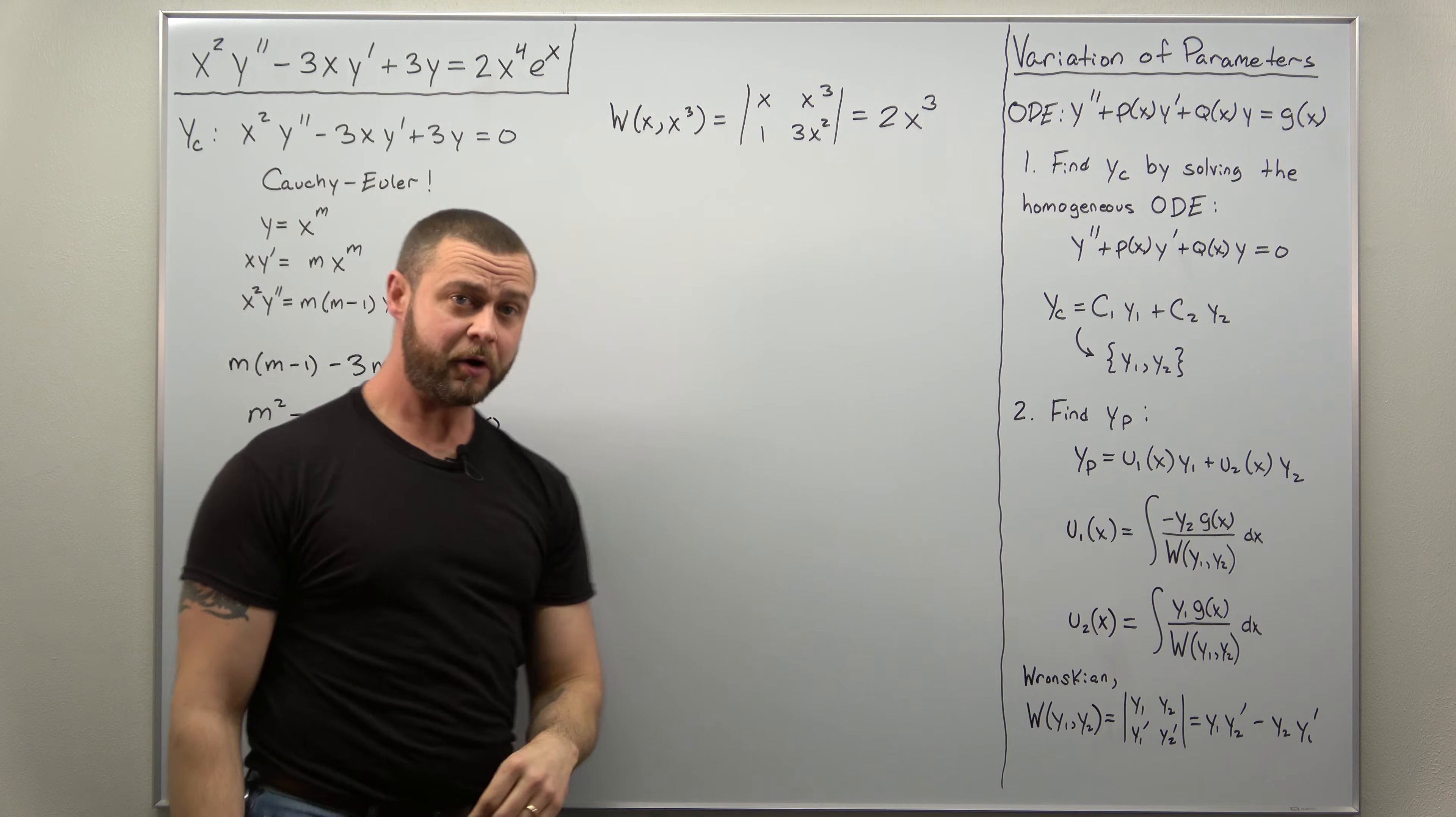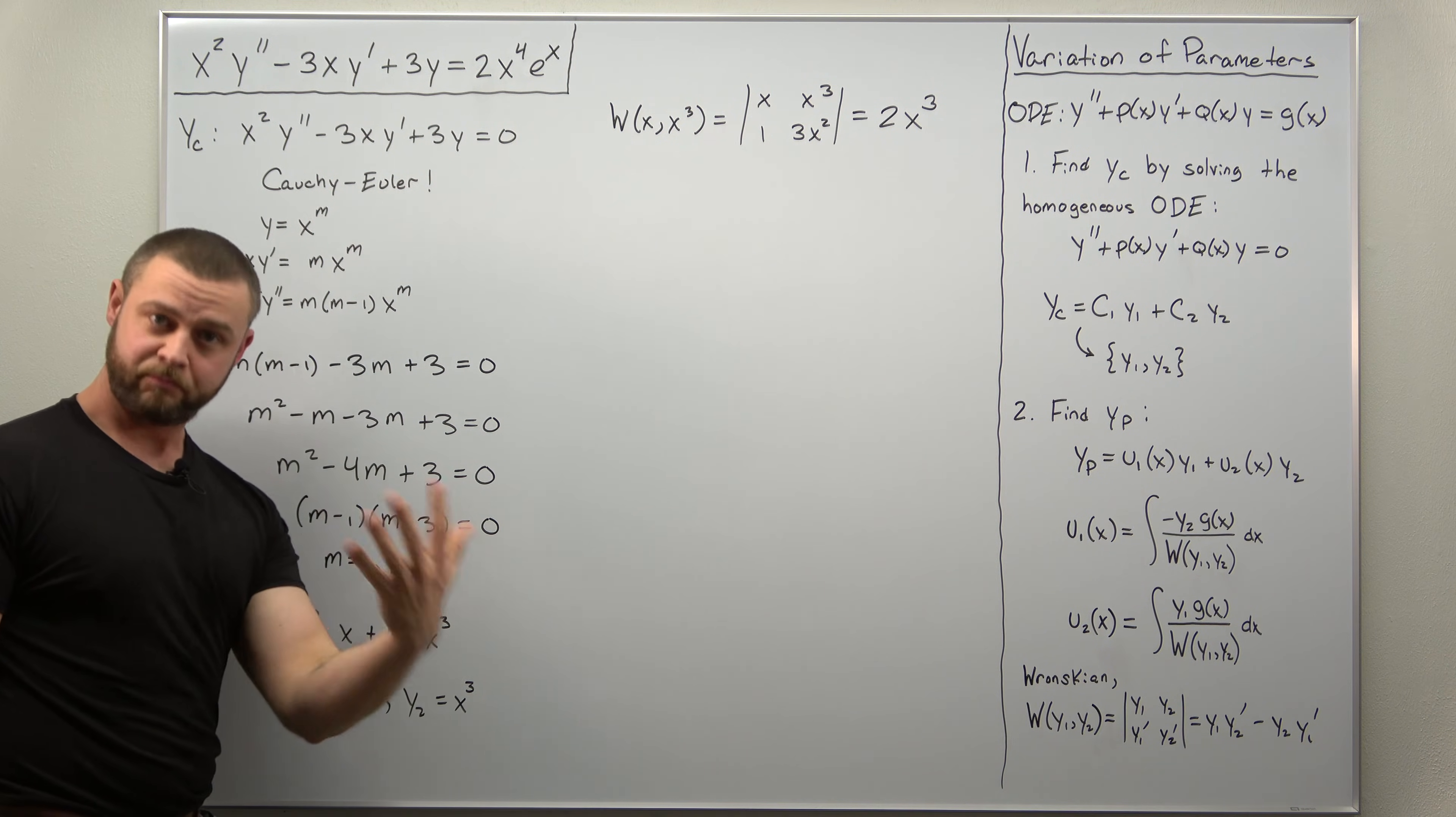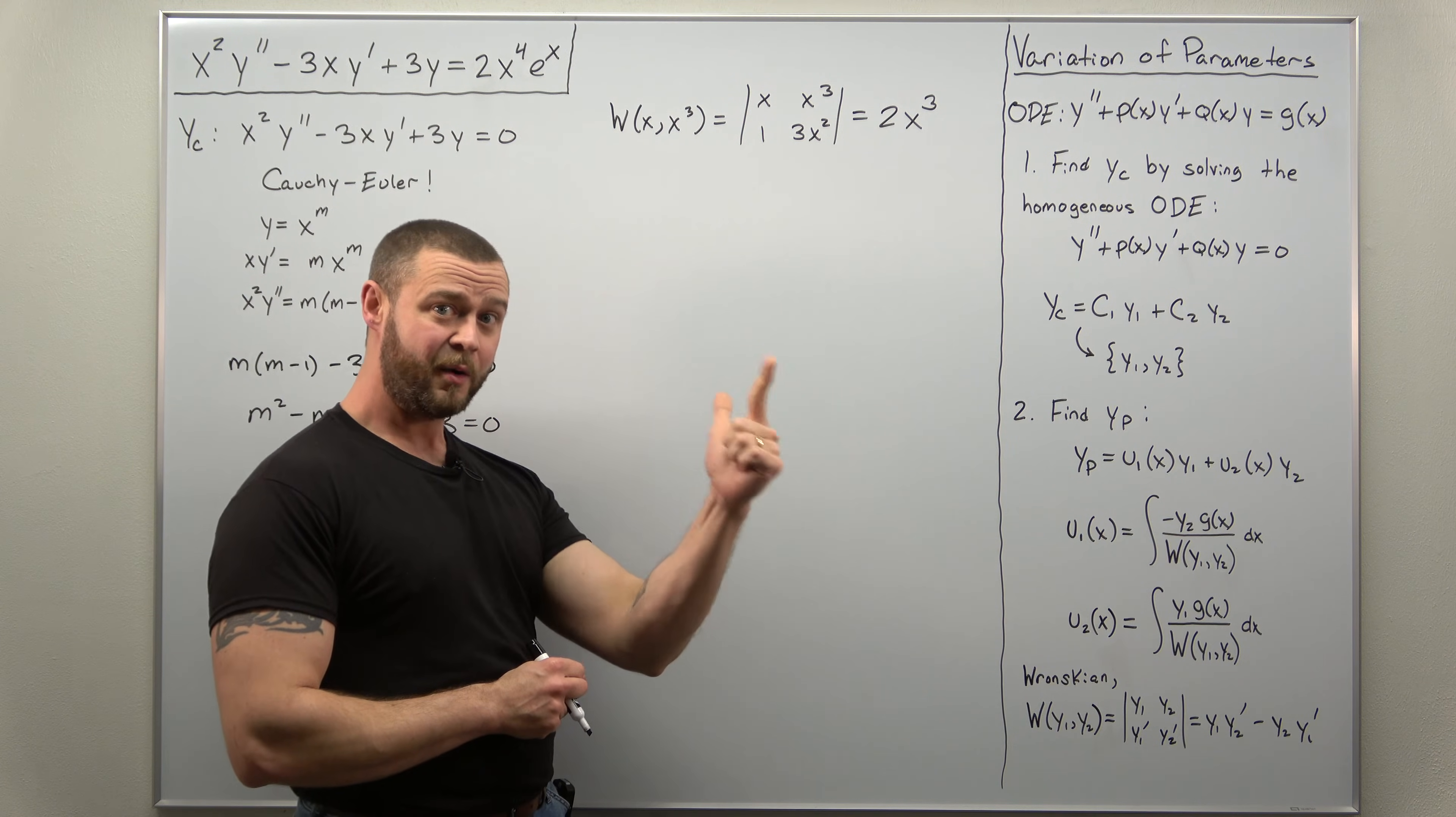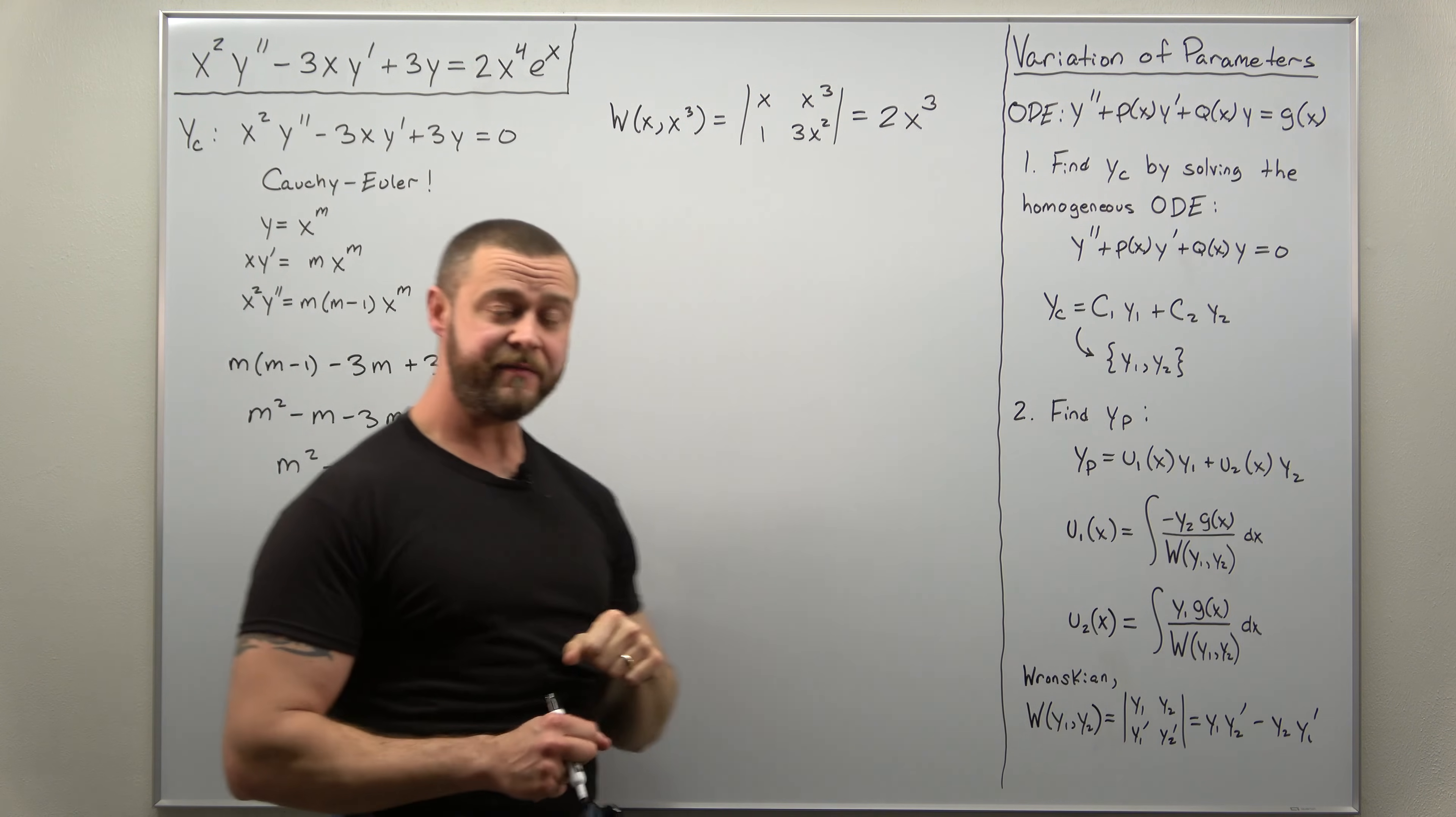Since the Wronskian is non-zero, that tells you these two solutions, Y1 and Y2 are linearly independent, which is what you want. The only other thing we need to implement is to implement your formulas for U1 and U2. Besides Y1, Y2, and the Wronskian, you need the non-zero right-hand side G of X.